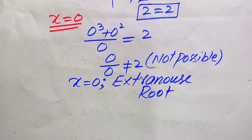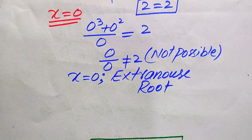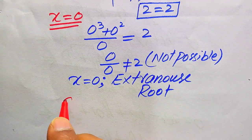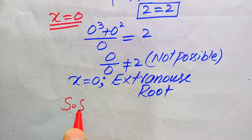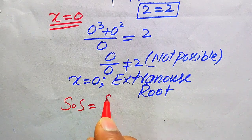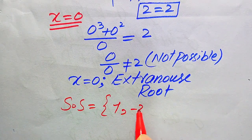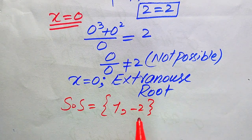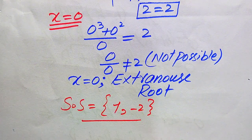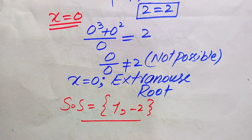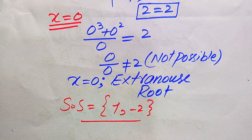So x = 0 is not a valid solution. Finally, the solution set of this problem is x = 1 and x = −2. This is the final answer. Thank you so much for watching this video — please subscribe to my channel for more exciting videos.